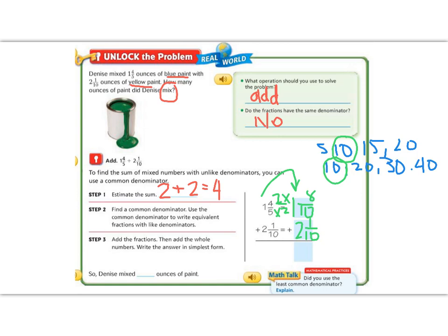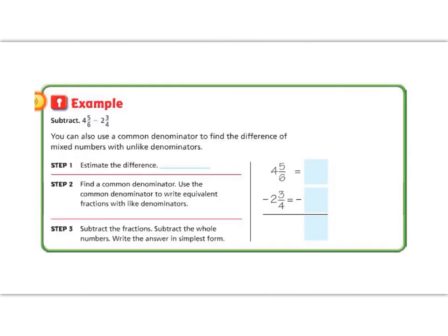And we're just going to bring that 1 from the mixed number over here. It doesn't change at all, and now we're ready to add. 8/10 plus 1/10 is 9/10, and 2 plus 1 is 3. So she has 3 and 9/10 ounces of paint. And if we think that 9/10 is almost 10/10, which would be a whole number, that would be almost 4. So our estimate was spot on.